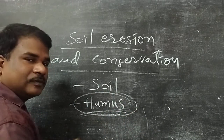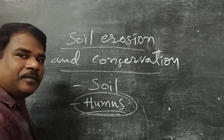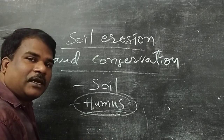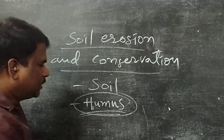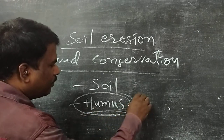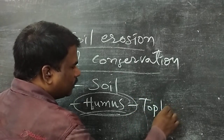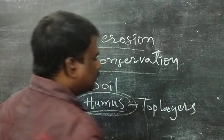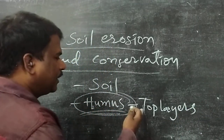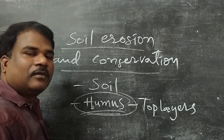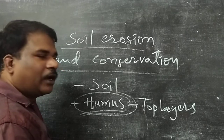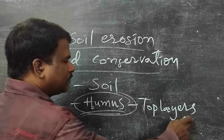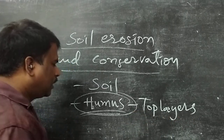Soil erosion means whatever soil is moving from one place to another place. Humus is present in the top layers of soil. Whenever rainfall occurs, due to heavy rainfall, the top layers of soil are moving from one place to another place.